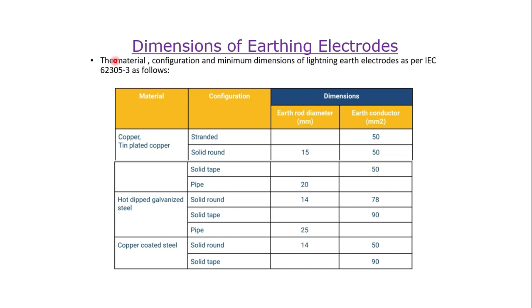Welcome to the dimensions of earthing electrodes. The material configuration and minimum dimensions of earthing electrodes as per IEC 62305-3 shall be as follows.